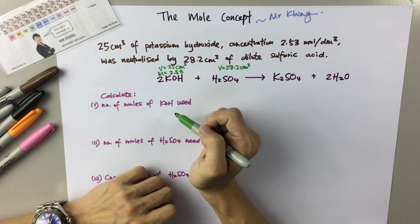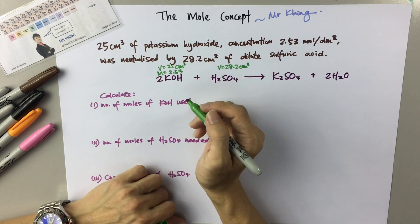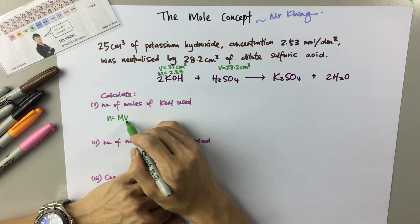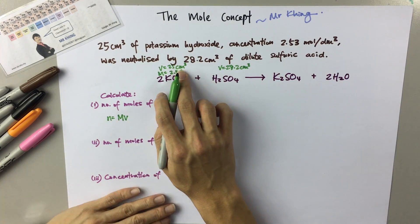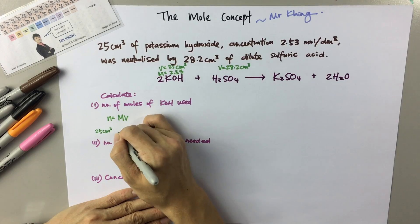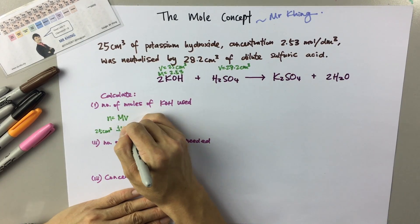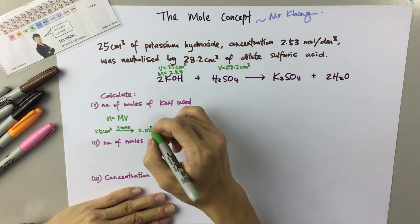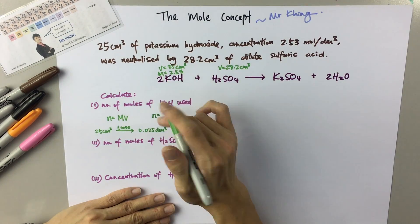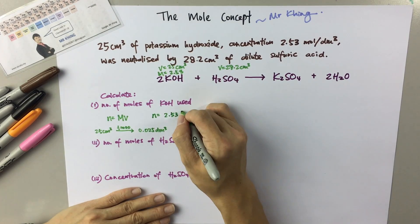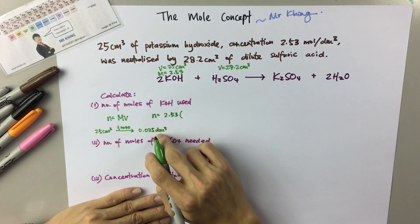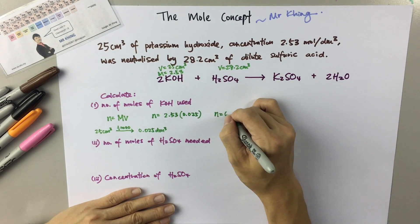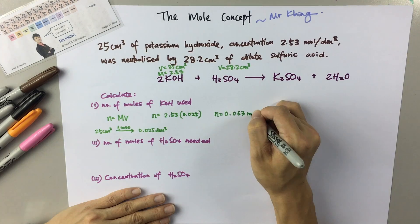They ask for the number of moles of KOH. Given the information of concentration (M) and volume (V), we can use the formula N equals to M times V. Volume must be in dm³, so we need to change 25 cm³ — divide by 1000 — to get 0.025 dm³. So N equals to 2.53 times 0.025, and the number of moles will be 0.063 moles.